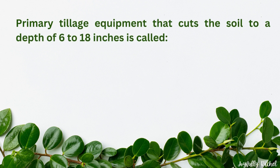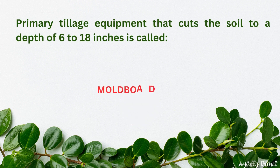Primary tillage equipment that cuts the soil to a depth of 6 to 18 inches is called a moldboard plow.